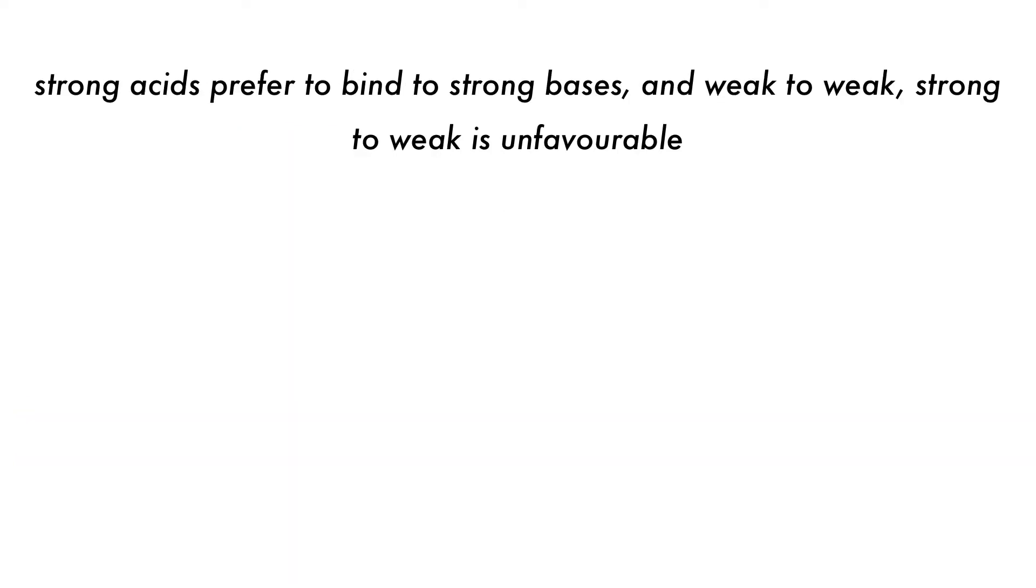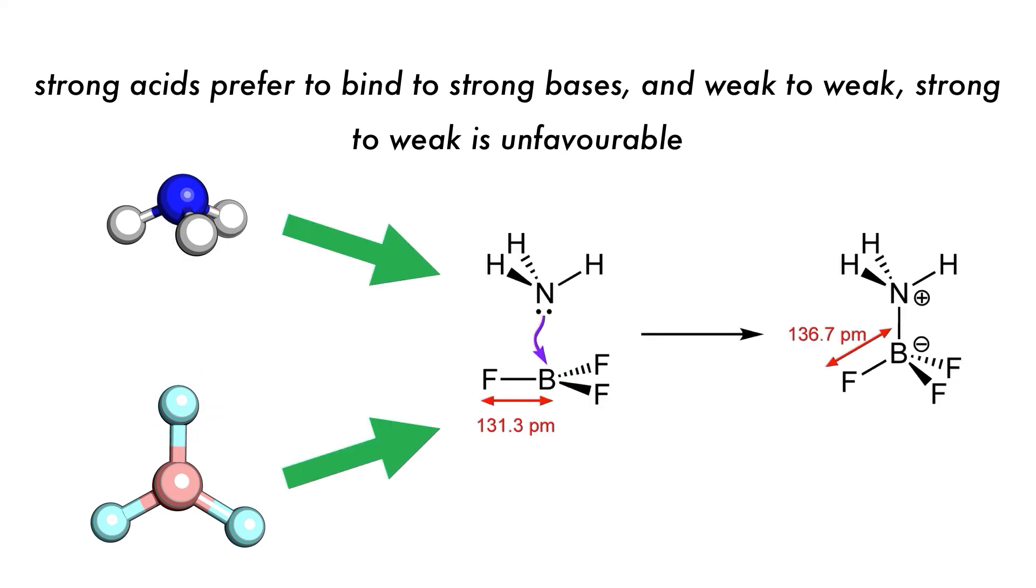Acid-base interactions can also be classified using the hard-soft distinction. Generally, like attracts like, as hard-hard and soft-soft interactions are preferred over hard-soft. If we take BF3 and ammonia, both are classified as strong. Ammonia is a strong Lewis base due to electron donation, and BF3 is a strong Lewis acid due to its electron deficiency caused by the electron-withdrawing fluorine groups. They then combine to form a strong acid-base adduct.